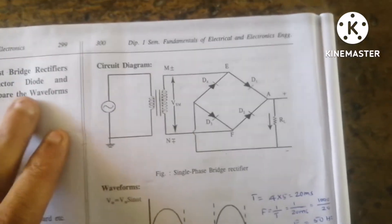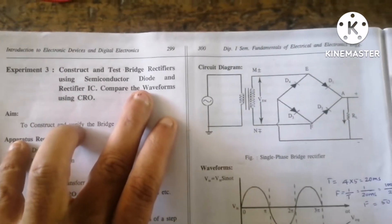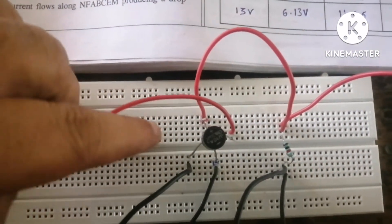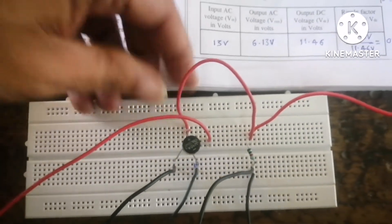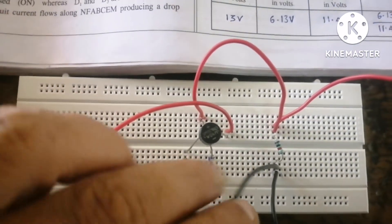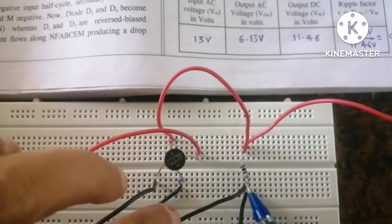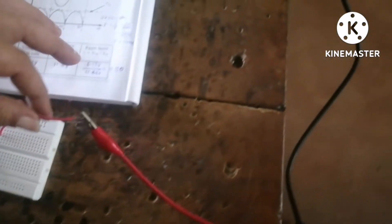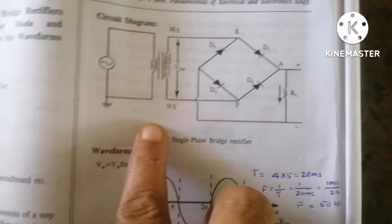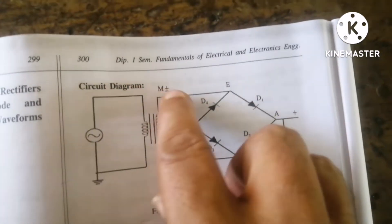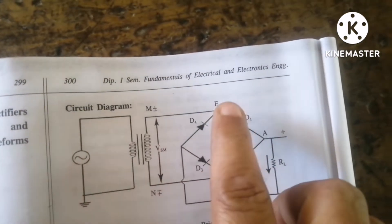We already studied the bridge rectifier using semiconductor diodes — we used four semiconductor diodes. A rectifier IC is also available. Instead of four diodes, I take one rectifier IC. That has four leads, as I have already explained. The positive lead has to be connected across the load resistor, and the negative leg again I take with a black wire across the load resistor. From the same line, I take one red wire and one black wire. From the CRO probe, I connect positive to positive and negative to negative. According to the circuit diagram, instead of four diodes, I have used the rectifier IC.